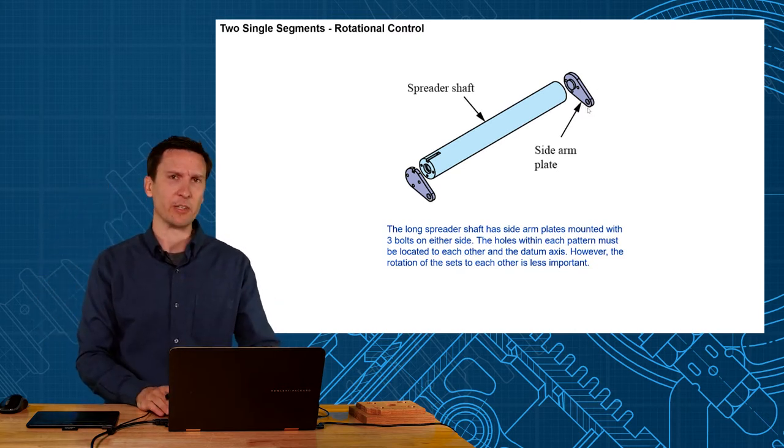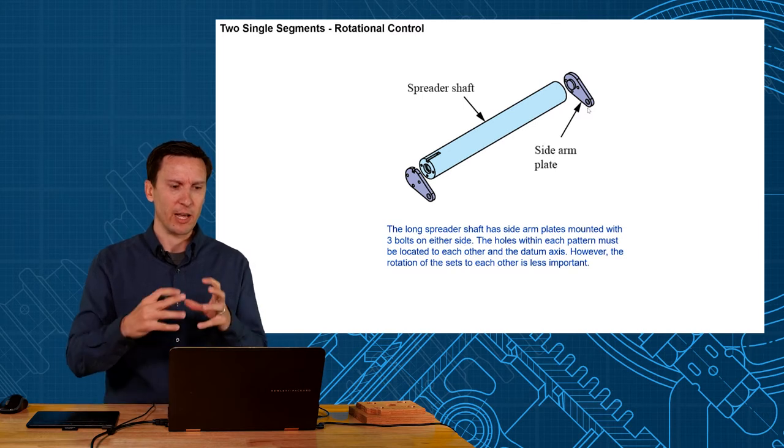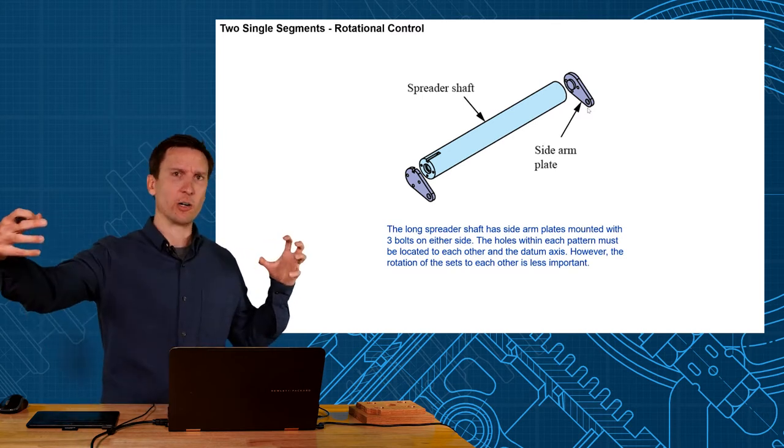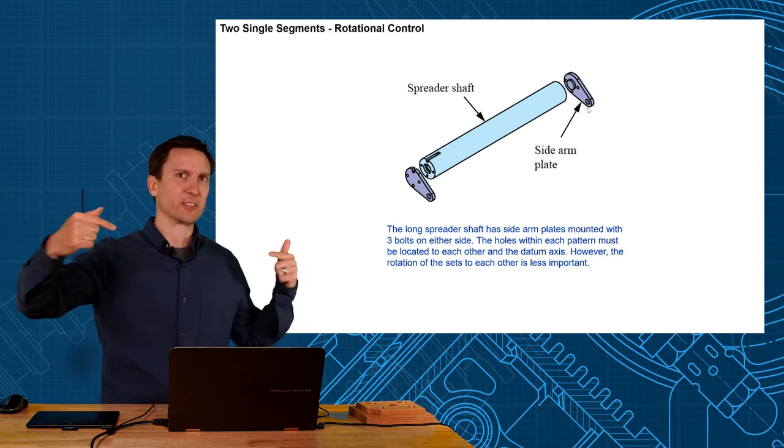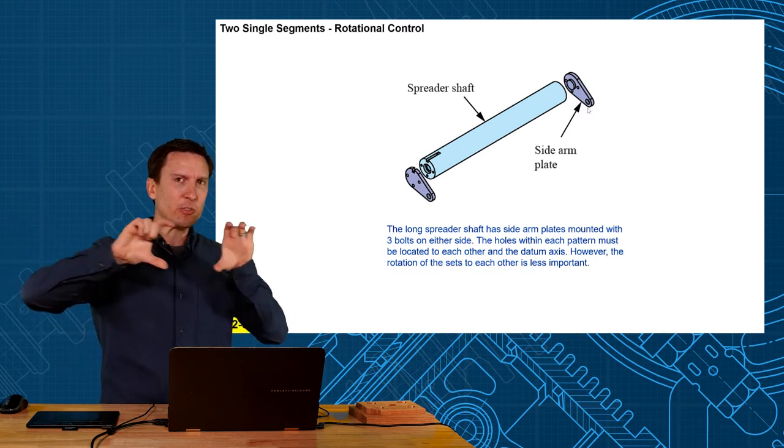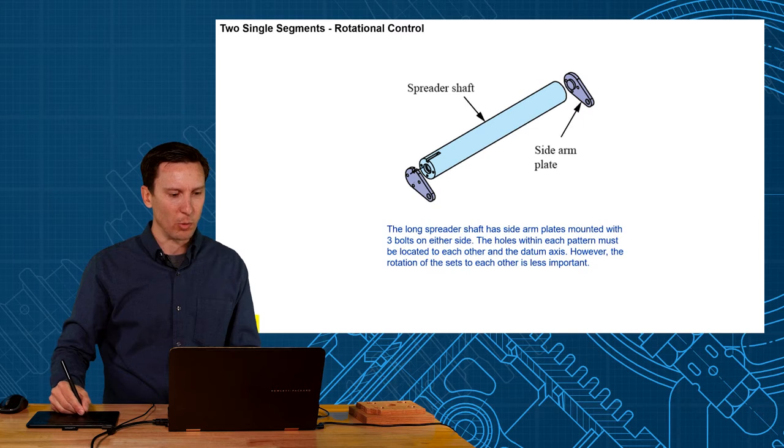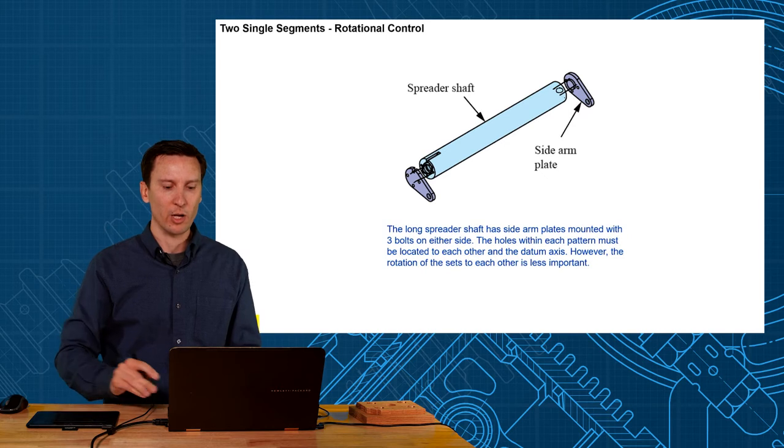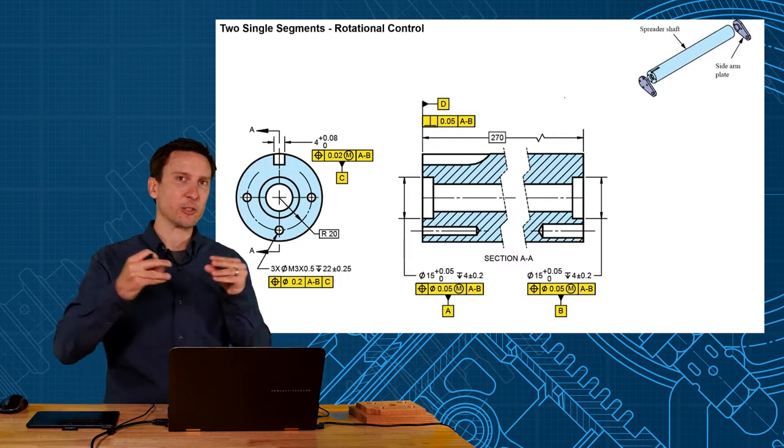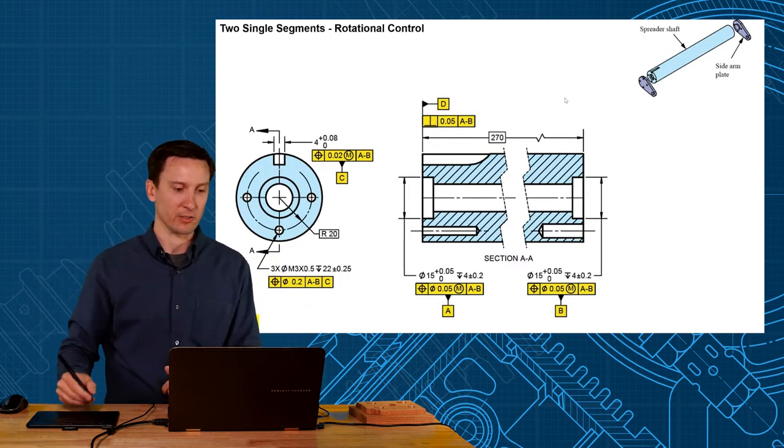First, how would we set up the datum reference frame for a part like this? That blue part is so long I think we want to go with an axis datum, and the outside is not really that critical. What's most important is how this component pilots into this hole and how this other component pilots into this hole. So we're going to select that A-B as our primary datum axis here.